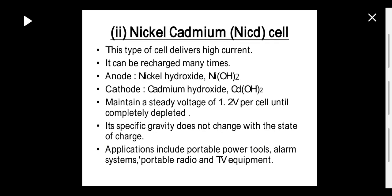Next is the nickel cadmium cell, which delivers high current and can be recharged many times. The anode is nickel hydroxide and cathode is cadmium hydroxide. It maintains a steady voltage of 1.2 volts per cell until completely depleted. Its specific gravity does not change with the state of charge — as the cell supplies charge its specific gravity remains the same. Applications include portable power tools, alarm systems, and portable radio and TV equipment.